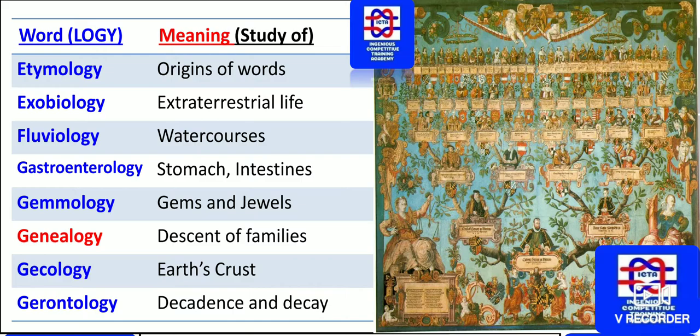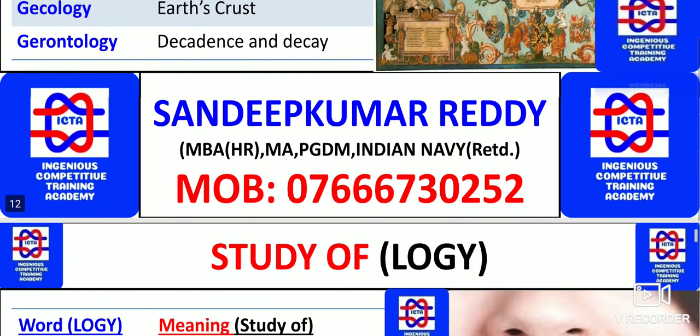Gemology concerns gems and jewels. The study of the descent of families — as you can see how exactly the family tree works — is known as genealogy. The study of the earth's crust is known as geology. The study of decadence and decay is known as gerontology.